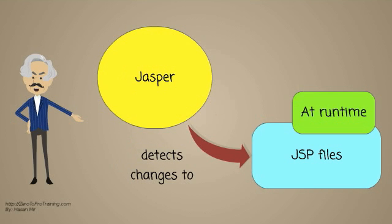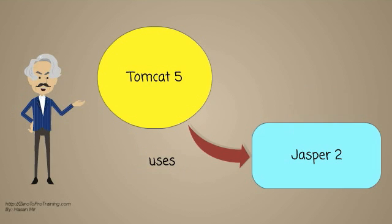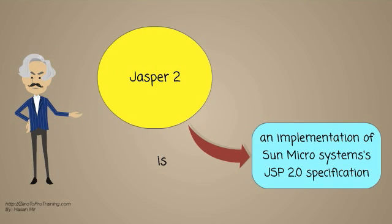At runtime, Jasper detects changes to JSP files and recompiles them. As of version 5, Tomcat uses Jasper 2. Jasper 2 is an implementation of Sun Microsystems' JSP 2 specification.